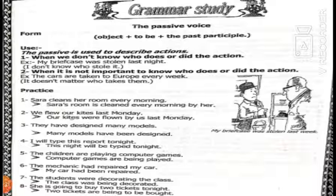Number six: 'The mechanic had repaired my car.' 'Had repaired' — past perfect — passive: had been + past participle. 'My car had been repaired.' Number seven: 'The students were decorating the class.' 'Were decorating' — past continuous — passive: was/were + being + past participle. 'The class was being decorated.' Number eight: 'She is going to buy two tickets tonight.' Going to — passive: going to be + past participle. 'Two tickets are going to be bought.'